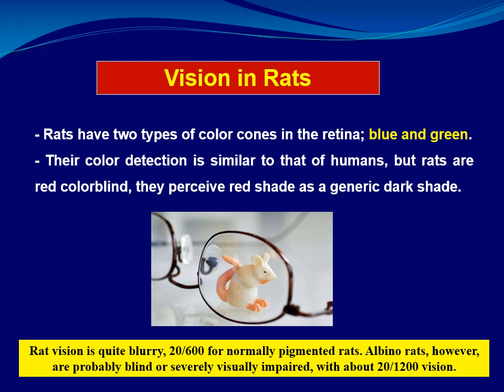Regarding vision in rats: rats have only two types of color cones in the retina — blue and green — there are no red cones. Their color detection is similar to humans in some ways, but rats are red-color blind; they perceive red as black or a dark shade. Rat vision is quite blurry overall, and albino rats are probably blind or have severely impaired vision.